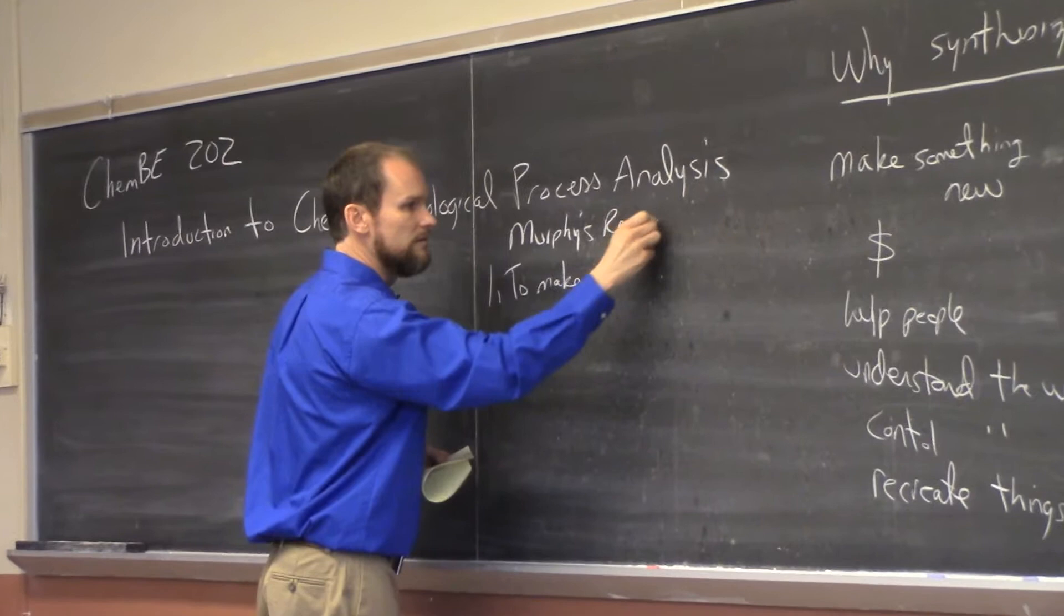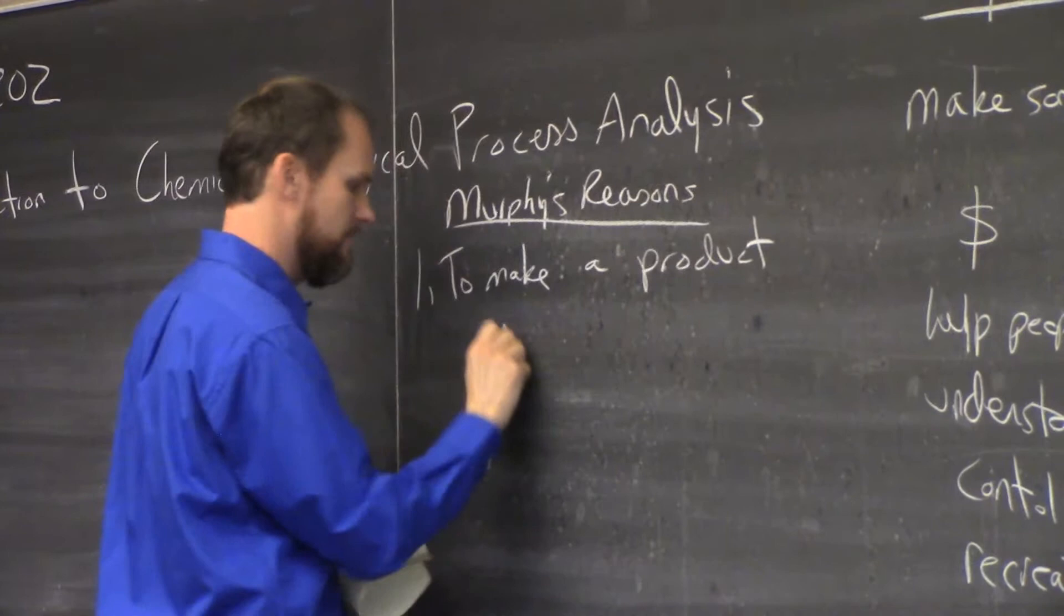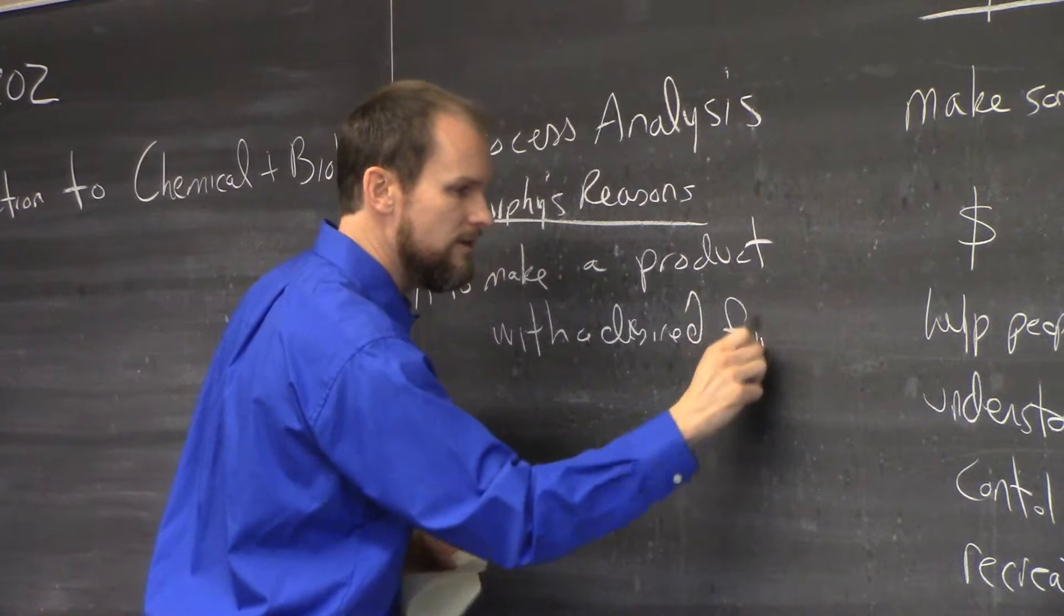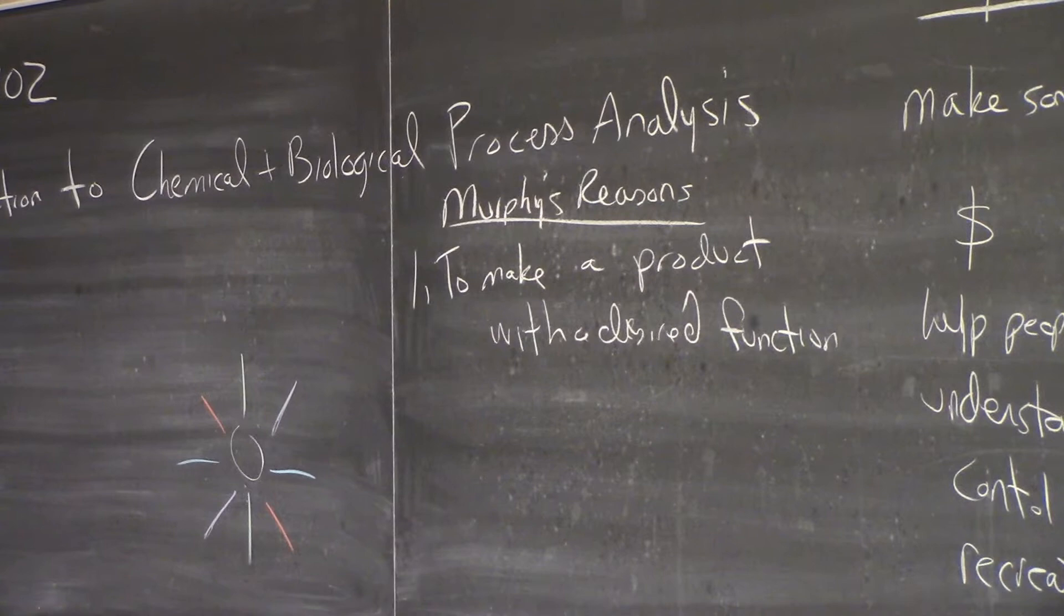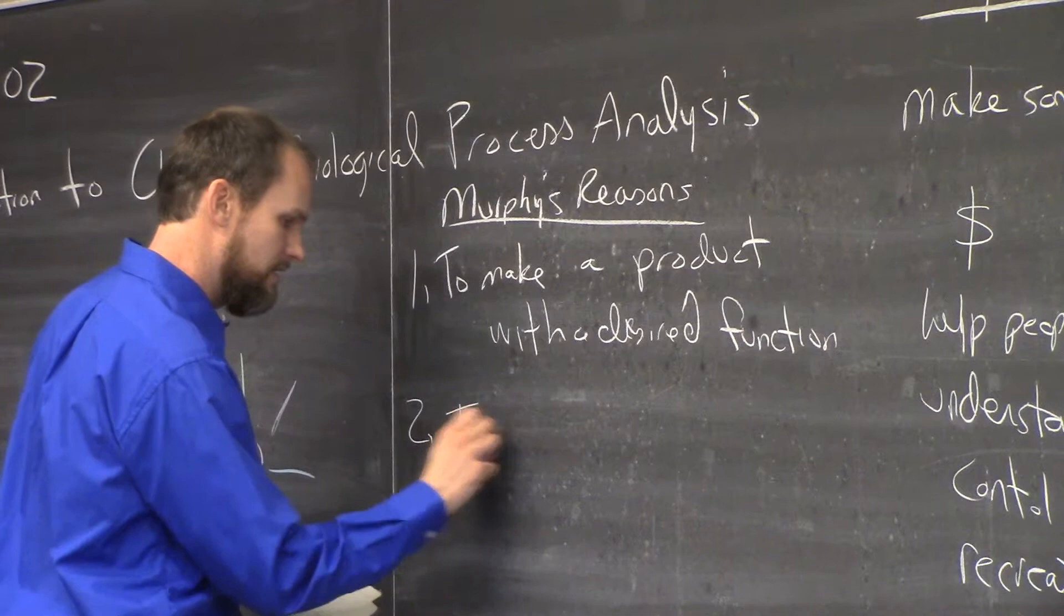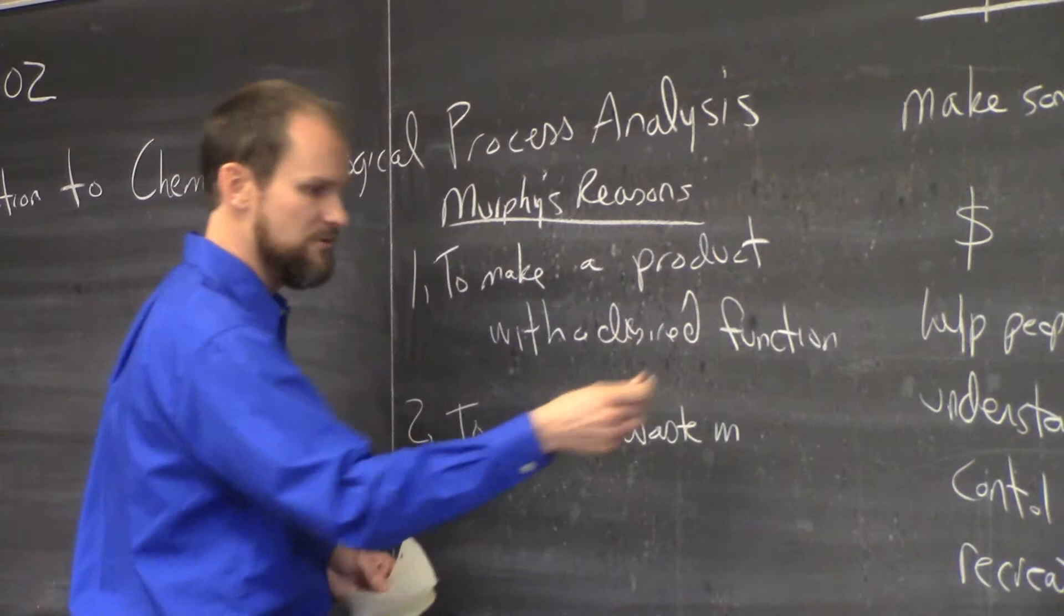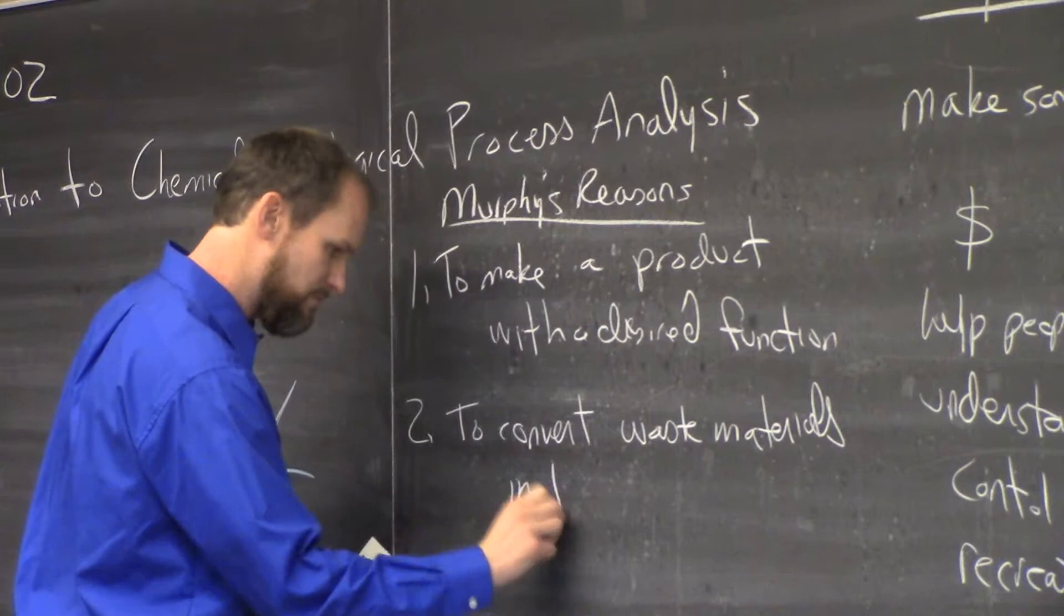So what does Murphy say? Murphy says she has four reasons for this. Murphy's reasons: to make a product with the desired function. For example, I want a screen for the Kindle that can switch really fast and be really bright to really dark and really cheap. So a particular function. You want a product that does something in particular. To convert waste materials into useful products. We actually had that first one too, just in several different forms.